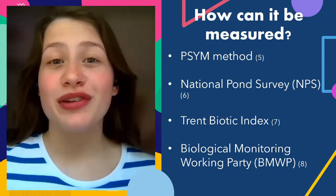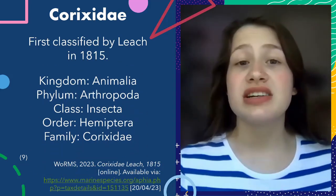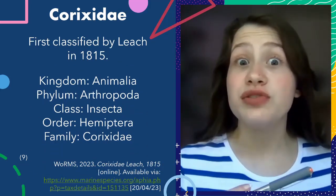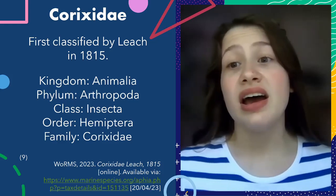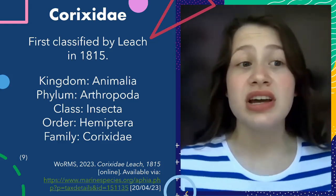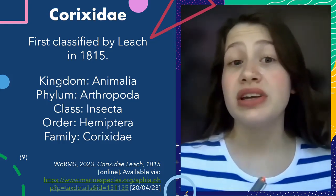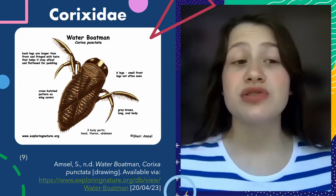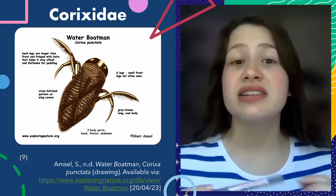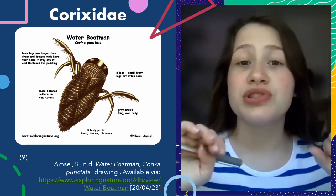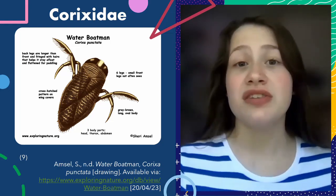What else is there to know about the Corixidae? They were classified by Leech in 1815 and belong to all of the taxonomic groups shown. There are over 100 species of aquatic or semi-aquatic Hemiptera in the UK, 37 of which are Corixidae, and 12 being identified at Rutland. They have piercing, sucking mouthparts, and some species only eat plants and algae. Their front legs have scoop-shaped tarsus to help walk onto plants to stay underwater, whereas their back legs have hairs and are oar-shaped to help with swimming. Unlike their relatives, the backswimmers, Corixidae swim right side up instead of upside down.